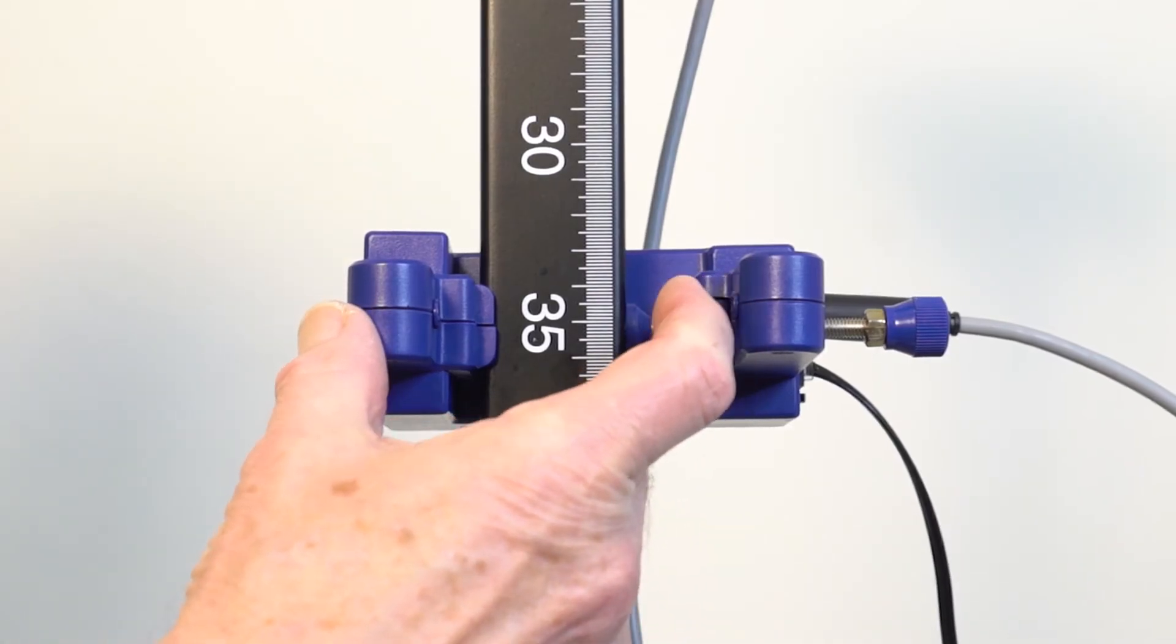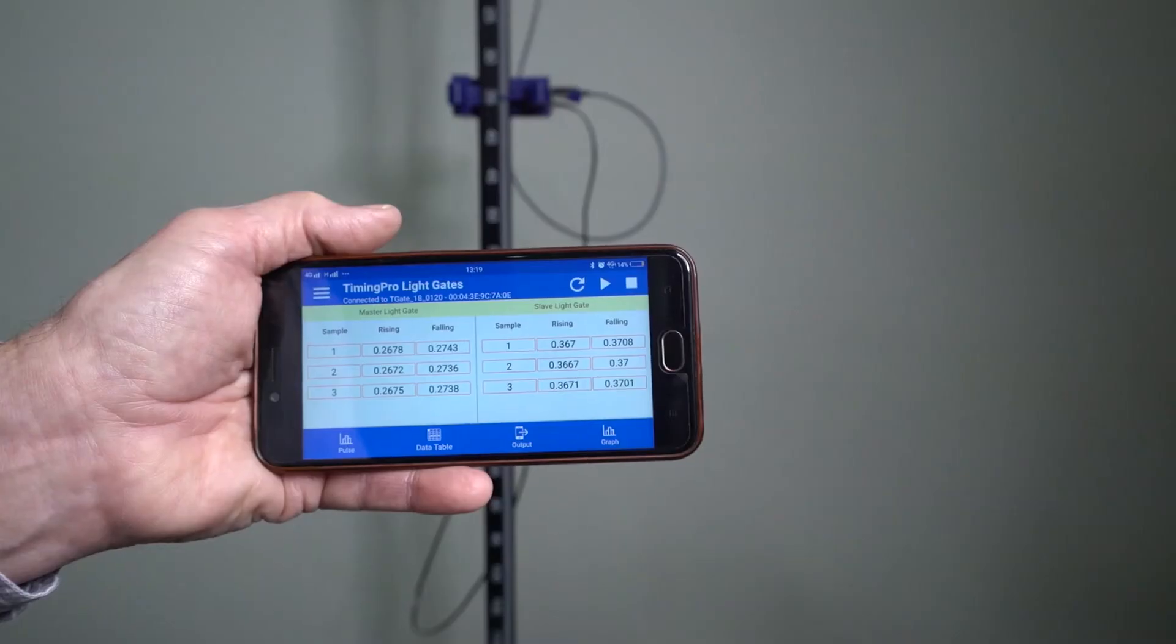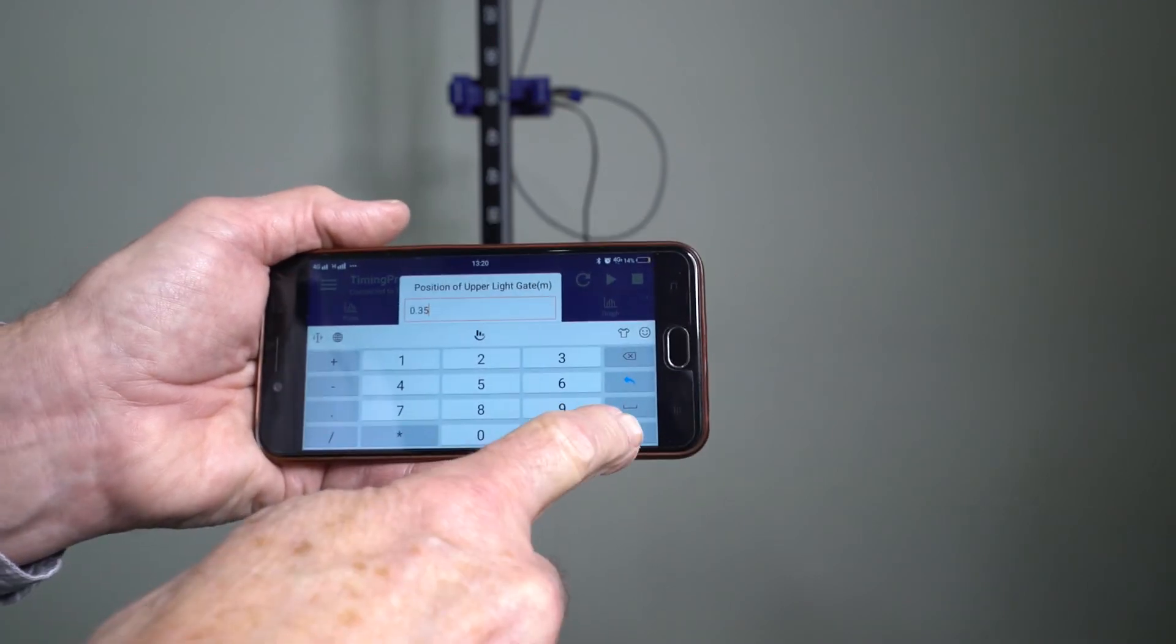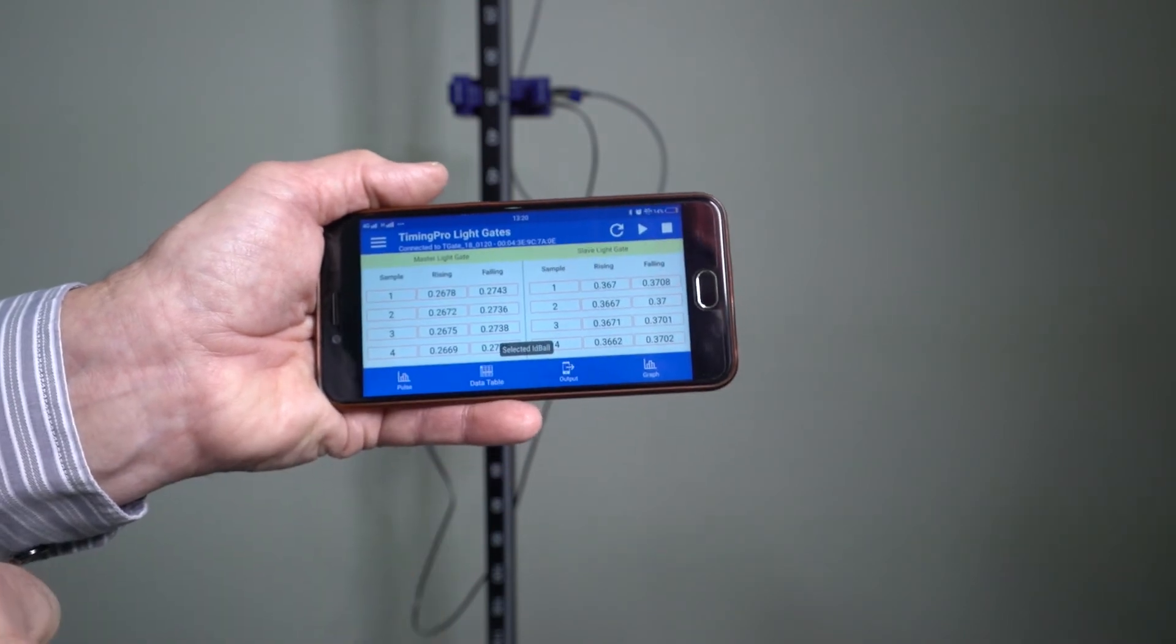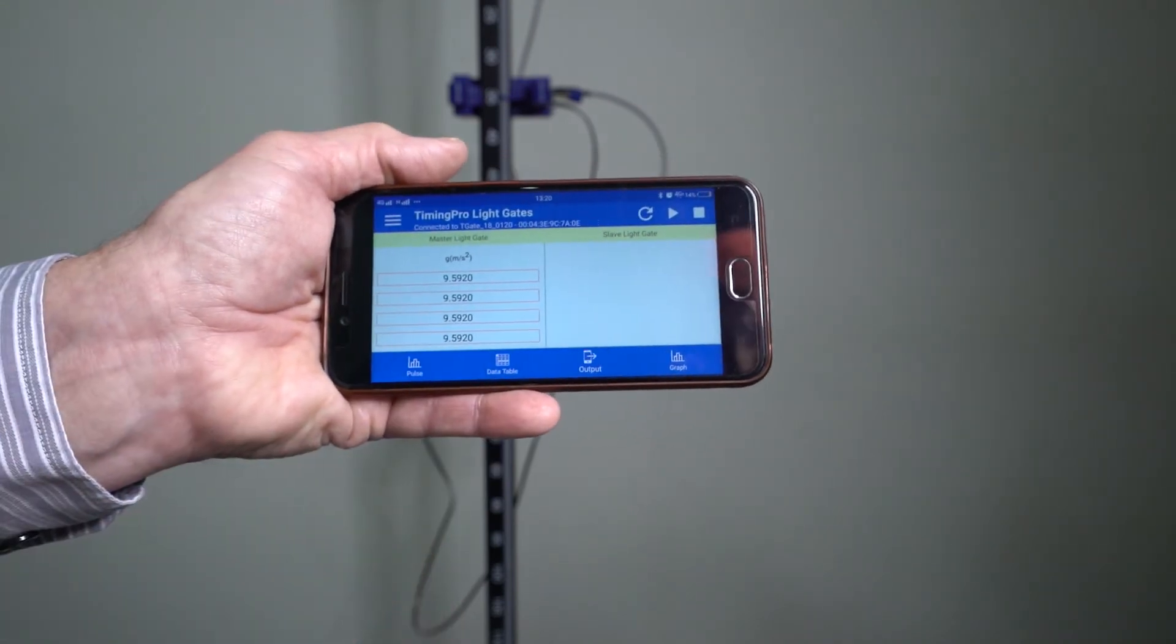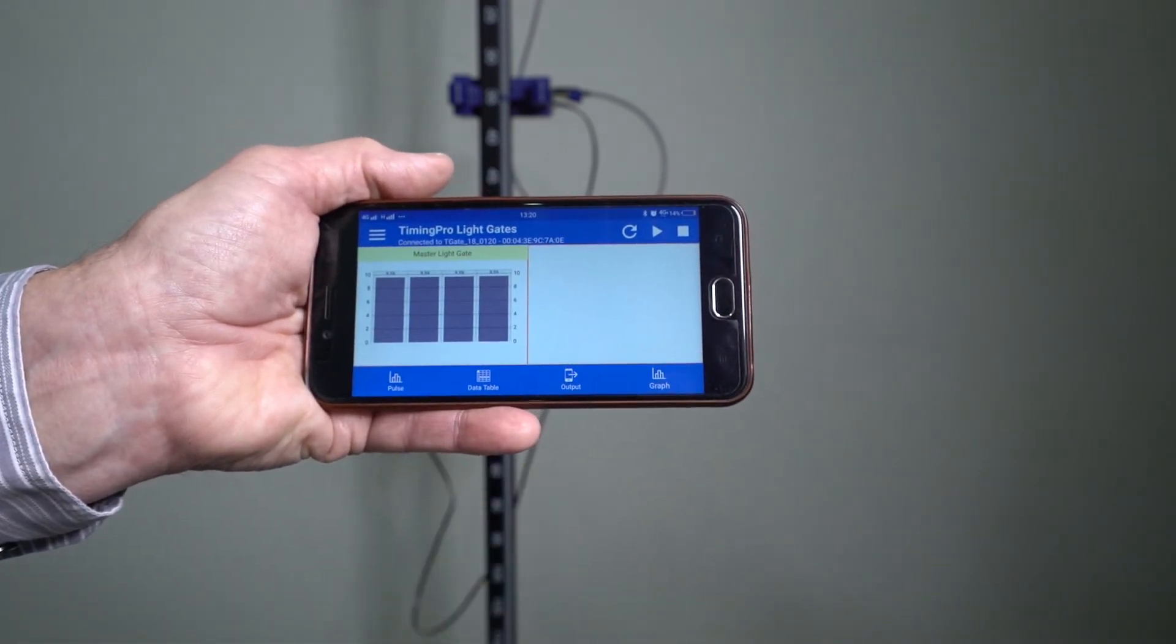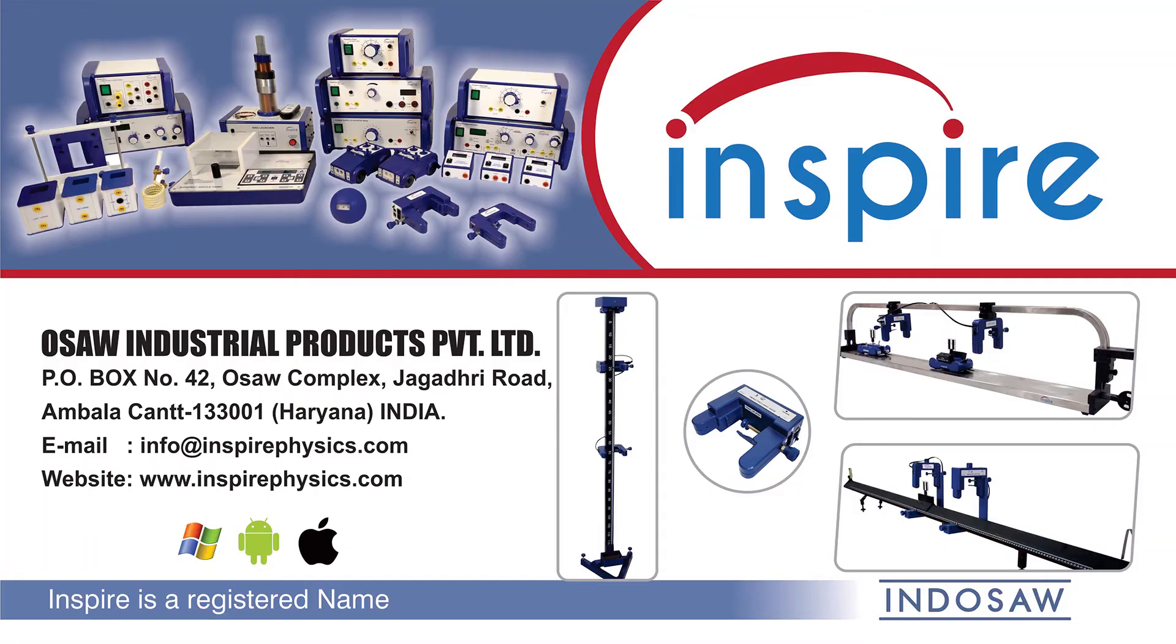Each light gate has a pointer to make positioning precise. Clicking start-stop triggers the solenoid to drop the ball and the light gates capture the event. Data is captured for each drop, building up data tables of light gate interruptions and calculating values of G which are displayed in a bar graph. The light gates are one member of the Inspire family of products.